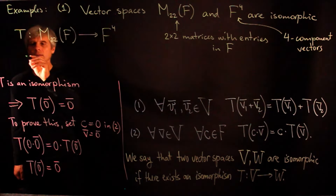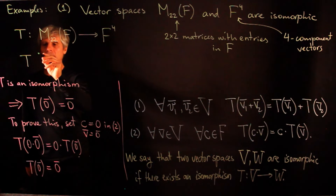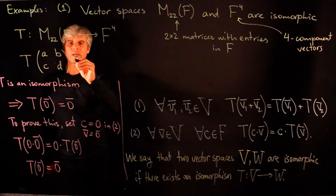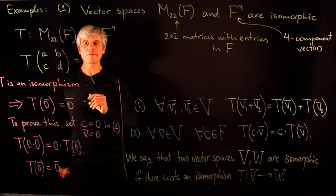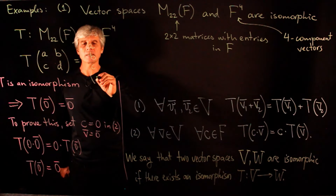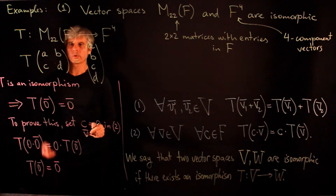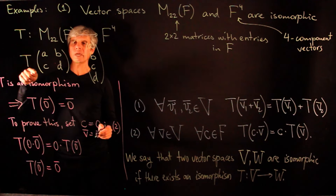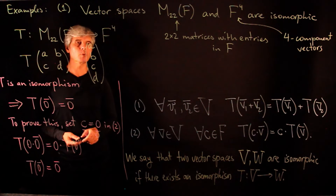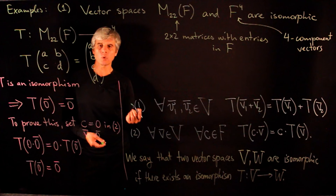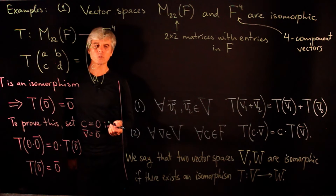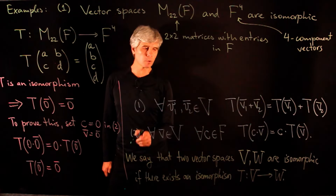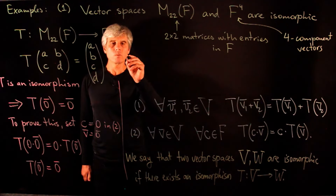We define T as follows: a matrix with entries A, B, C, D is transformed into the four-component vector (A, B, C, D). The input is a 2×2 matrix and the output is a vector with four components. To prove this is an isomorphism, we need to show three things: that this function is bijective and that it satisfies the two properties of an isomorphism of vector spaces.